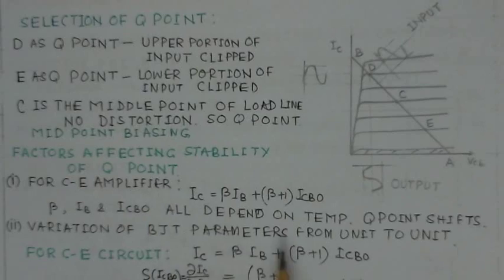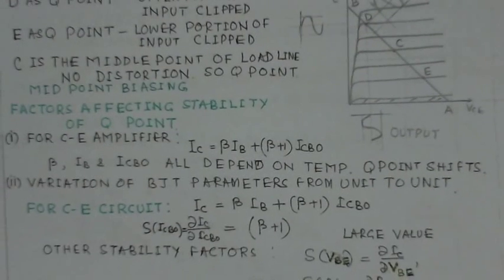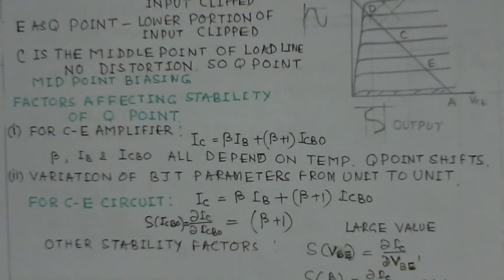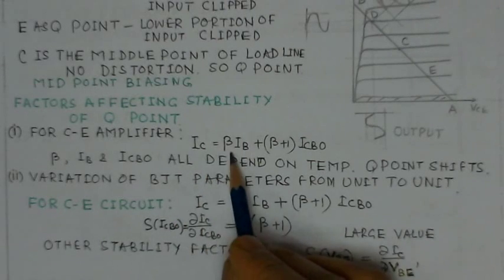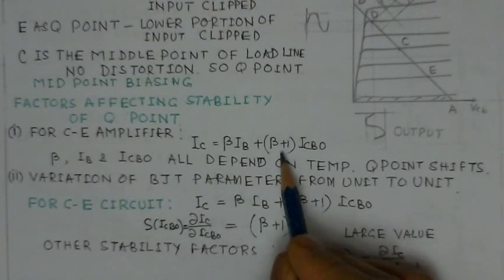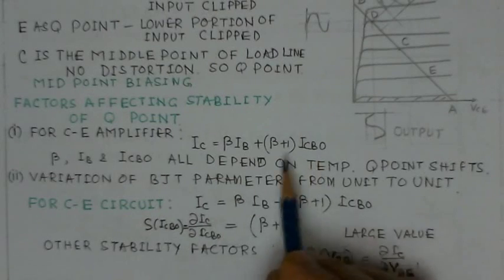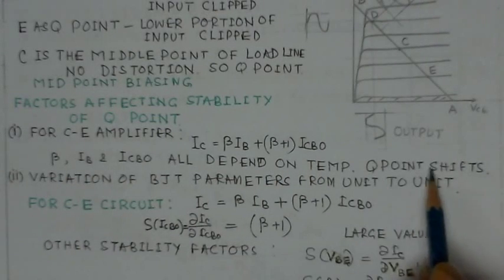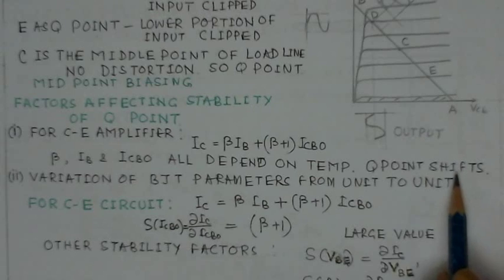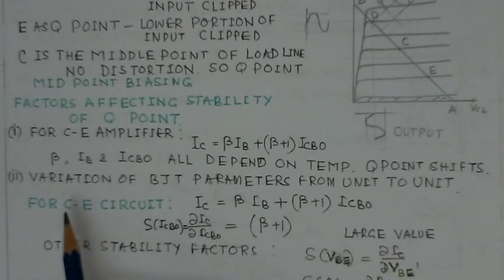Regarding factors affecting stability of the Q point: for a common emitter amplifier, IC is given by beta × IB + (beta + 1) × ICBO. Both beta × IB and ICBO are dependent on temperature, so the Q point will get shifted.